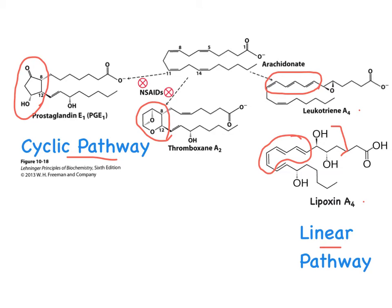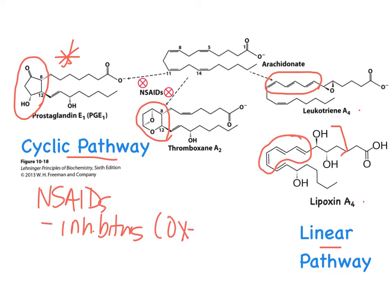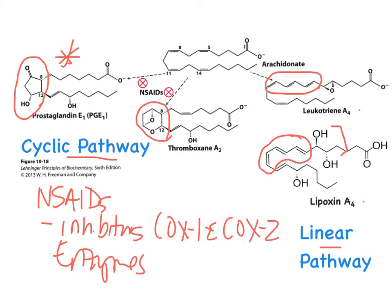With respect to inflammation, the eicosanoid family of concern is the prostaglandins. From a drug development standpoint, the NSAIDs target this pathway as inhibitors of the COX-1 and COX-2 enzymes, and it's really the COX-2 enzyme that's important for inflammation.